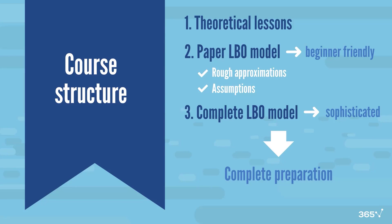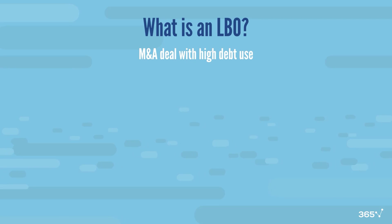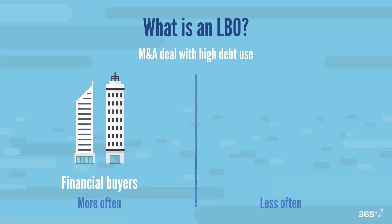In this introductory lesson, we have a pretty simple task — we want to answer the question: what is an LBO? A leveraged buyout is a type of M&A deal in which the acquirer uses a high portion of debt to finance the transaction. In other words, this is an acquisition with high debt use. Typically, LBOs are carried out by financial buyers, such as private equity or hedge funds.